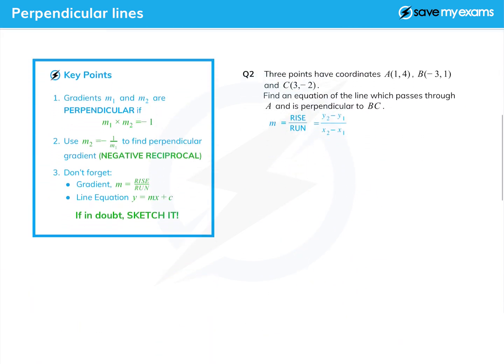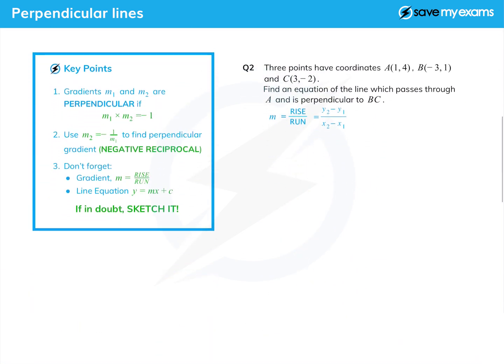Now we are going to do one more question. This time we're given three points A, B and C, and we're asked to find an equation of the line which passes through A and is perpendicular to BC. You may be able to picture that in your head, but I think we should probably sketch this.